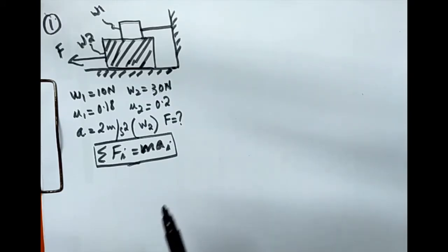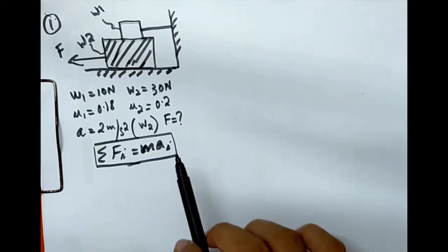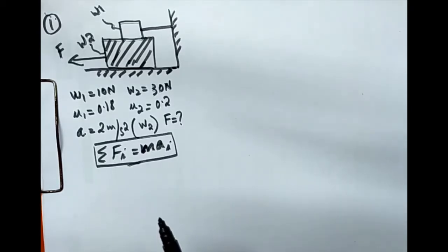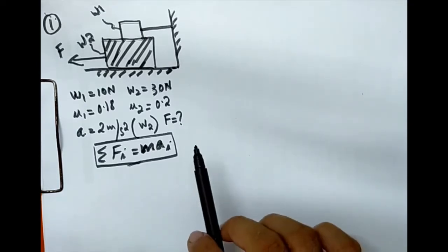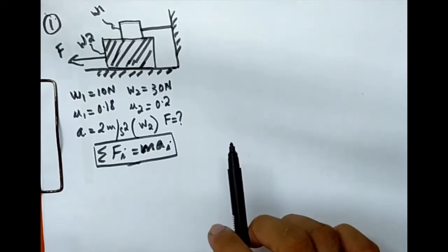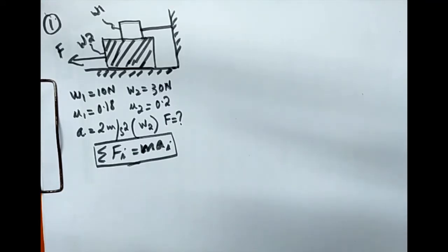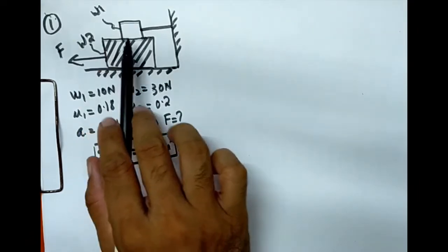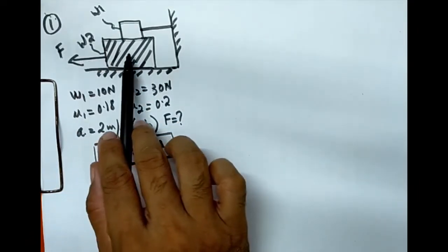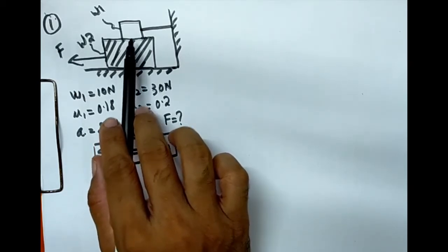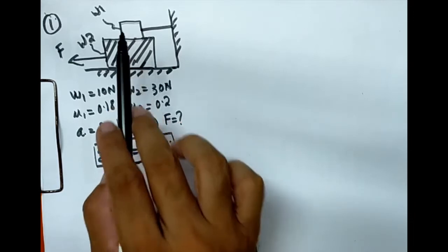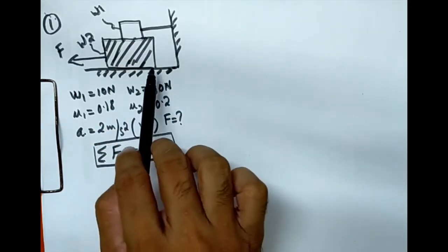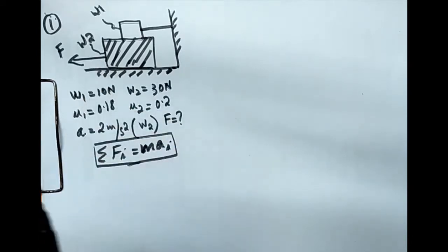When drawing free body diagrams, the primary thing to consider is to plot the diagram of the object whose movement can be predicted. Whenever there is friction, the frictional force opposes the direction of motion. Here, force F acts on w2, so we can directly say w2 will move to the left, and the frictional forces at contact surfaces will act to the right. We start with the free body diagram of w2.